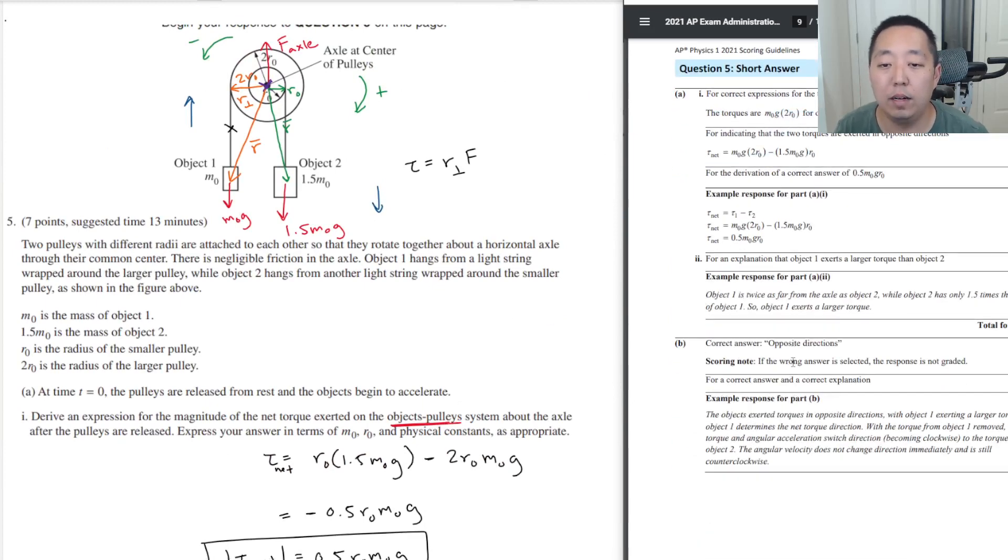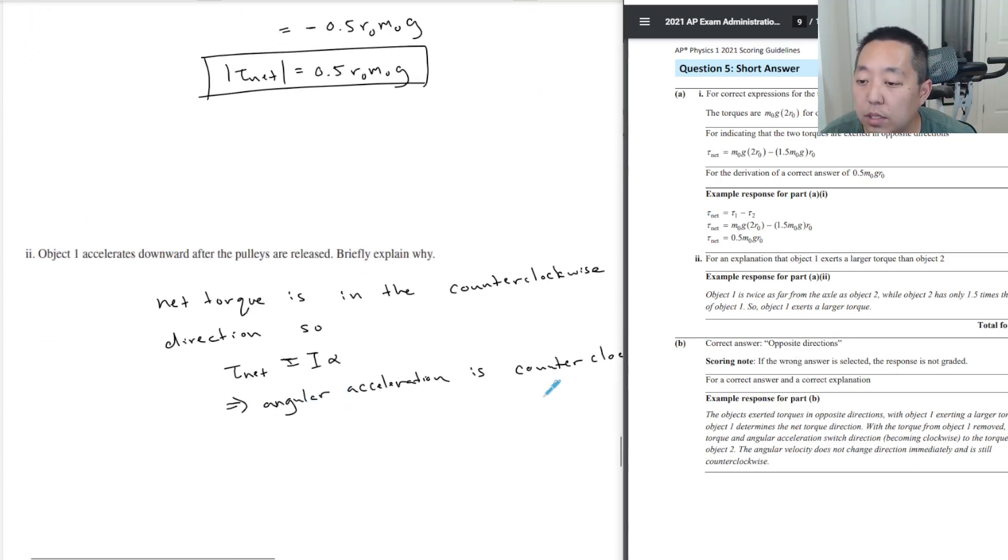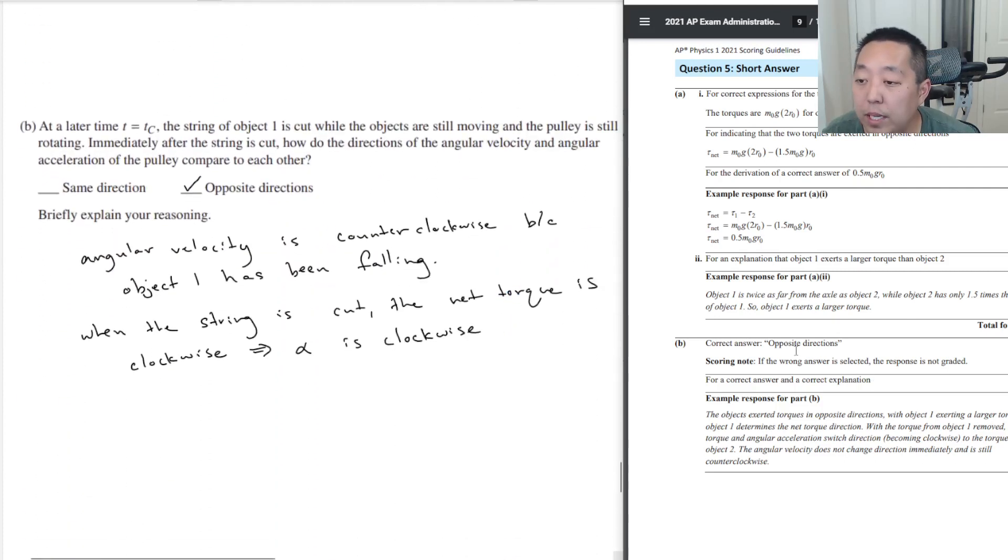Last question here, number five. For the correct expression of the torques from the way that the torques are MG2R₀ and 1.5 MG2R₀ and then indicating two torques are exerted in opposite directions, which I did with the subtraction here. And so the net torque is 0.5R₀M₀G. Example response looks almost perfectly right, other than I had the orientations backwards, but this doesn't matter. Correct answer for this one is angular acceleration. For an explanation, the object exerts a larger torque than object 2. Object 1 is twice as far as the object. Net torque is in counterclockwise direction. I made that statement. I don't know if you have to say like one exerts a larger torque. That's essentially the same as saying the net torque. So I would assume that I would probably get credit for that, but I didn't say explicitly why is this torque bigger than that one, just that the torque is in that direction.